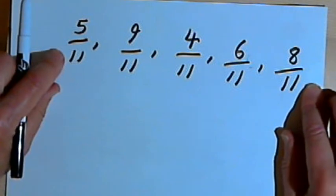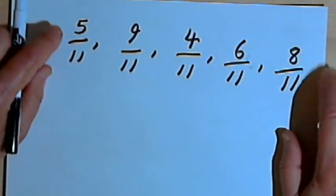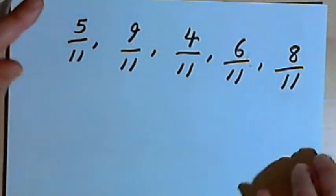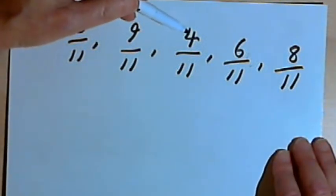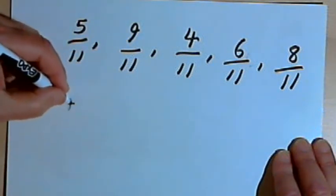And when the denominator is the same, you can tell which fraction is smaller by just looking at the numerators. The smallest numerator will tell you which one is the smallest fraction. So 4 over 11 is going to be the smallest fraction I've got.